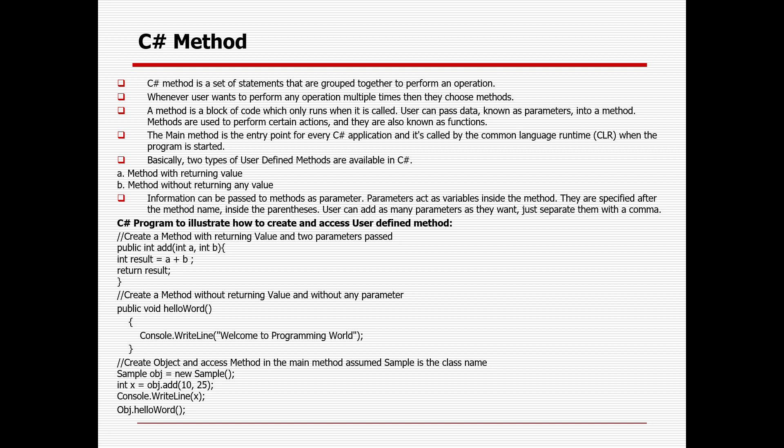Whenever a user wants to perform an operation multiple times, they choose methods. A method is a block of code which only runs when it is called. Users can pass data known as parameters or arguments into a method. Methods are used to perform certain actions and they are also known as functions. The main method is the entry point for every C# application and it is called by the Common Language Runtime or CLR when the program is started.